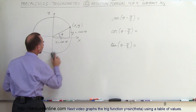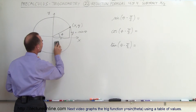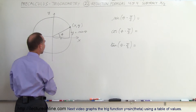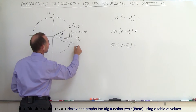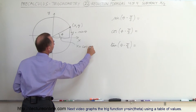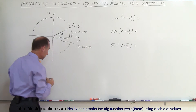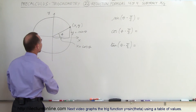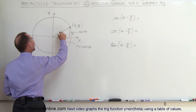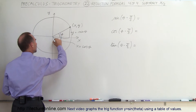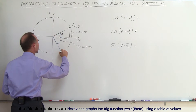Let me write that up here — x is equal to the cosine of the angle theta. Now I'm subtracting 90 degrees from that angle, so I'm going to go in this direction, 90 degrees, which puts me at a new position on the unit circle.